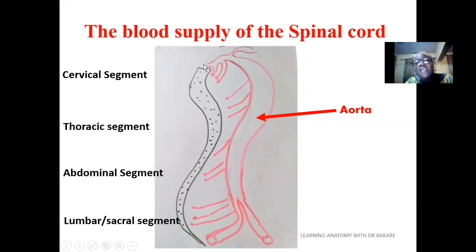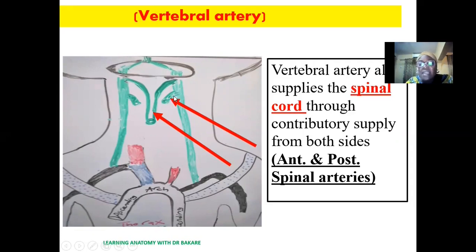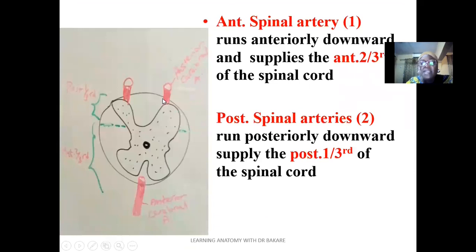So we can see that as the spinal cord runs downwards, it is supplied by the different branches that emerge from the aorta. The vertebral artery plays a major role in the blood supply of the spinal cord. It emerges from the subclavian artery before entering the foramen magnum. From it emerges the anterior spinal artery, as well as two posterior spinal arteries. The anterior spinal artery runs anteriorly downwards and supplies the anterior two-thirds of the spinal cord, while the two posterior spinal arteries run posteriorly downwards and supply the posterior one-third of the spinal cord.